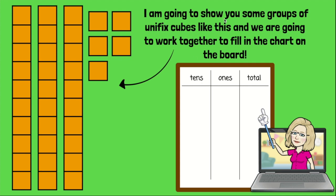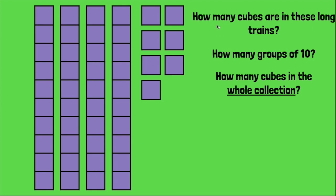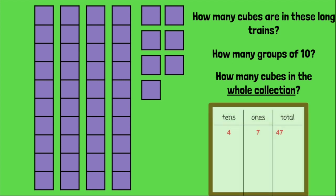I'm going to show you some groups of Unifix cubes, and we're going to work together to fill in the chart on the board. On your whiteboard, go ahead and make a quick little chart showing tens, ones, and total. How many cubes are in these long trains? That's right, there are ten. How many groups of ten? How many cubes in the whole collection? If on your whiteboard you wrote four tens and seven ones, making 47, you were correct.